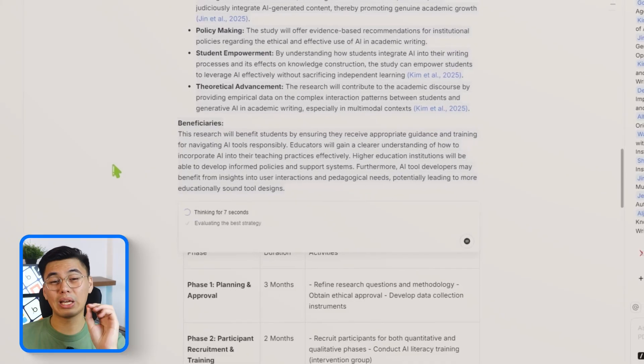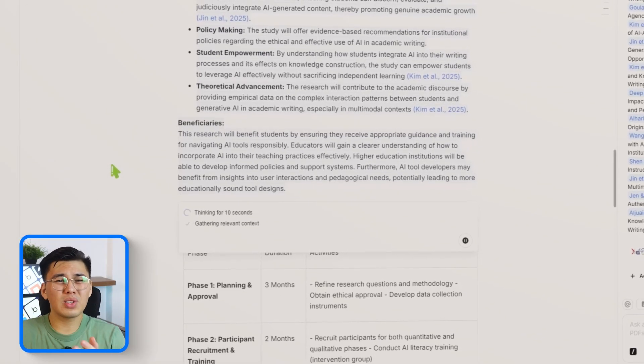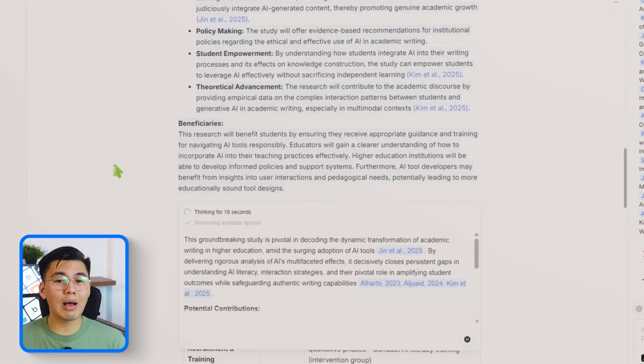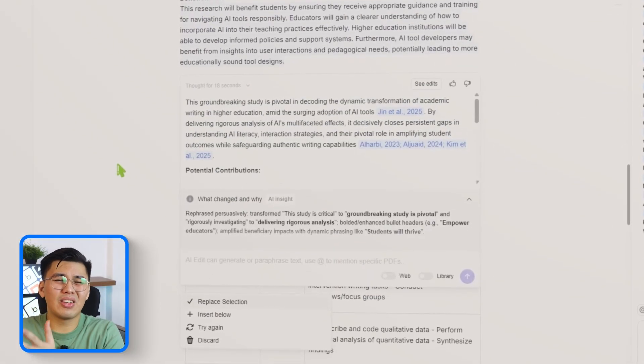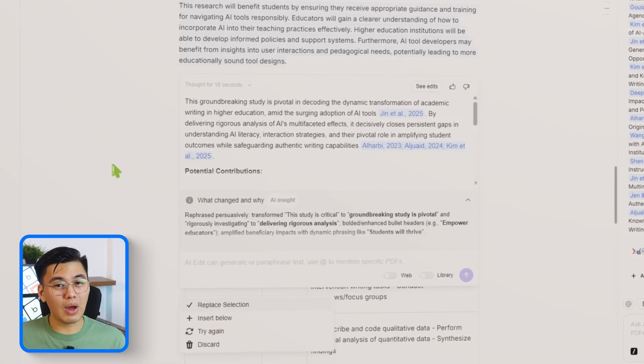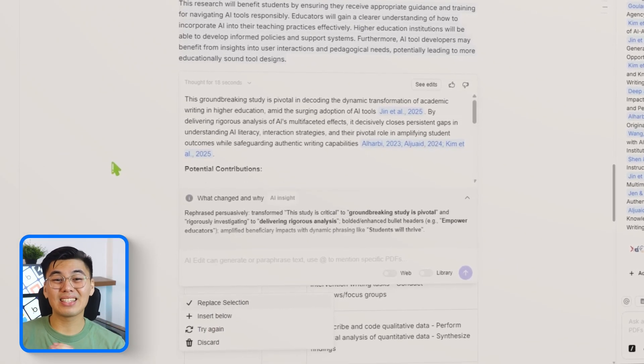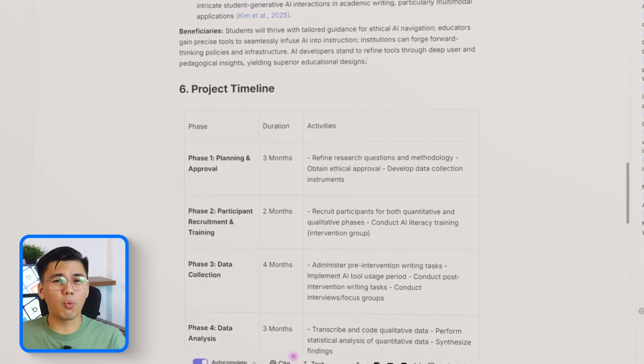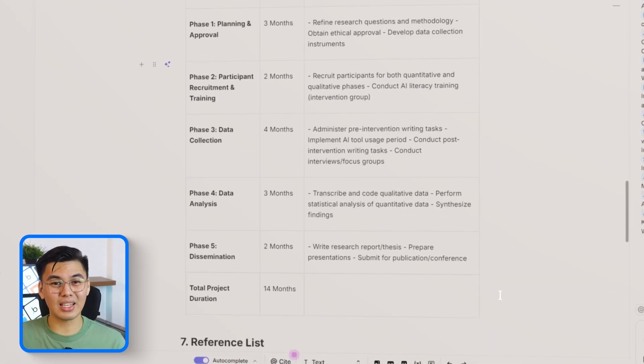and shaped the wording so it sounds purposeful and academically solid. This usually helps the section shift from sounding general or vague to something that clearly communicates impact and relevance. This section now has a stronger sense of direction and a clearer explanation of why the study is worth conducting.